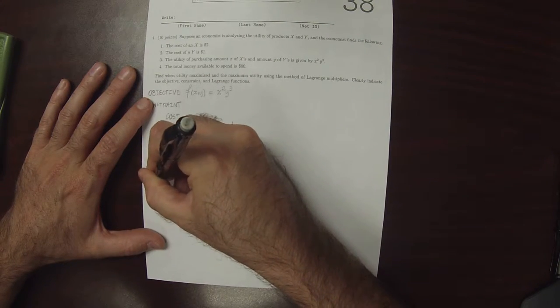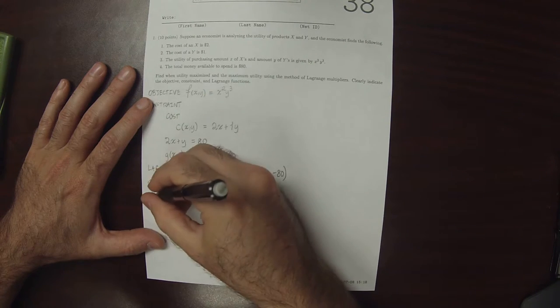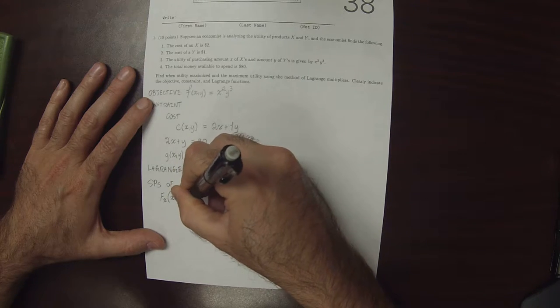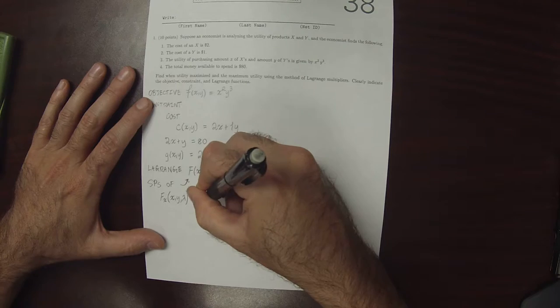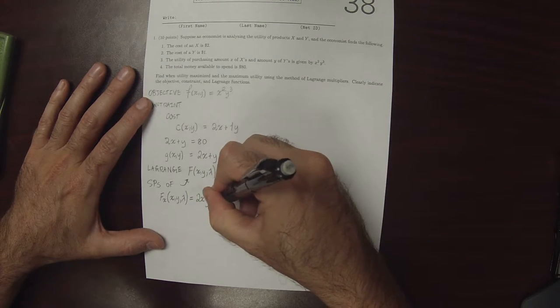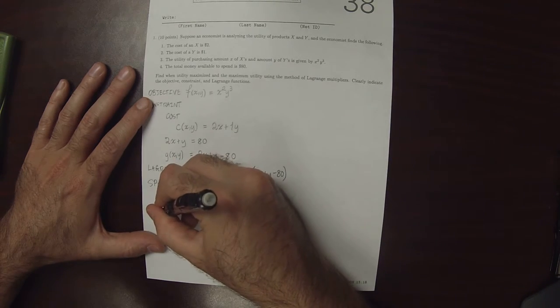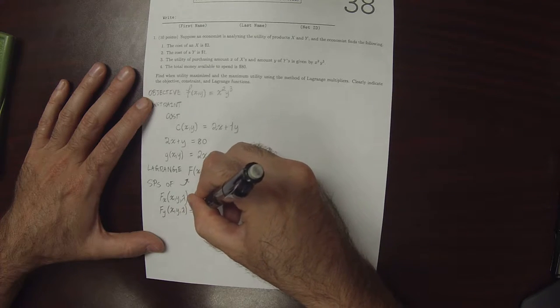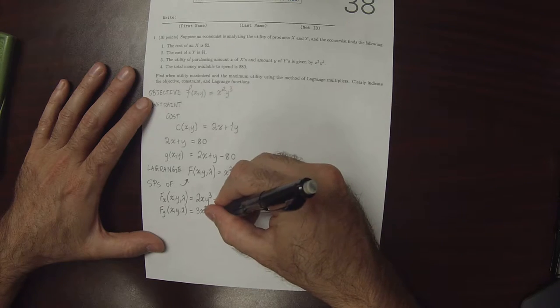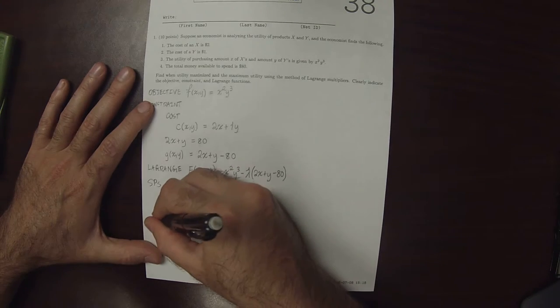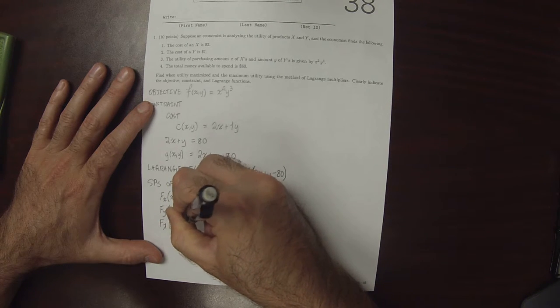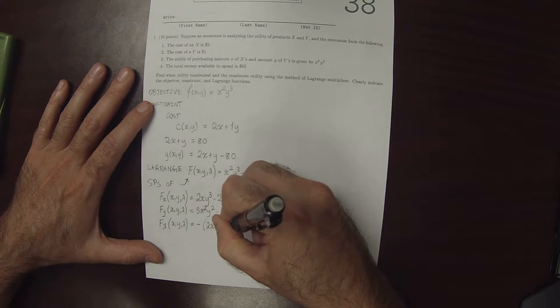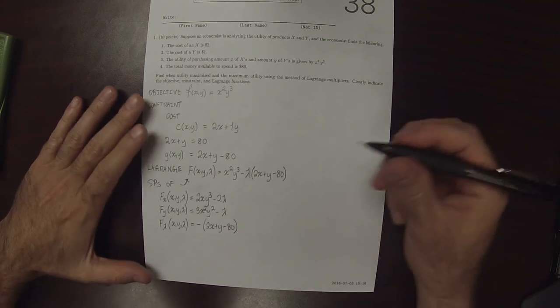So let's find the stationary points. The x partial of big F is 2x y cubed minus 2 lambda. The y partial would be 3x squared y squared minus lambda. The lambda partial is negative 2x plus y minus 80. And we want to solve all three of these equal to zero at the same time.